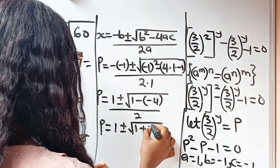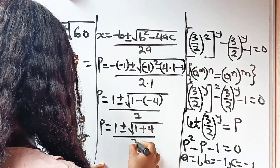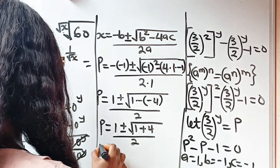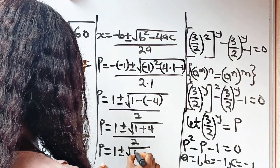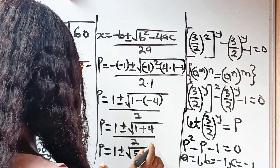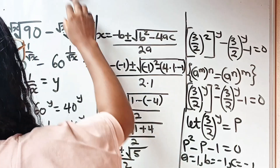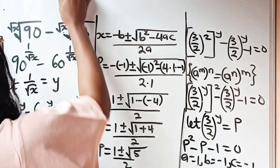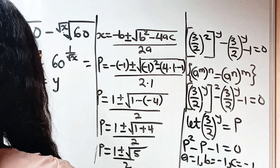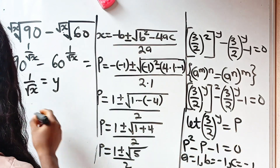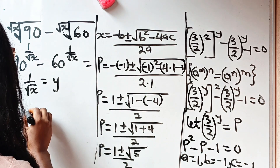Simplifying: p equals 1 plus or minus square root of 1 plus 4, divided by 2 — since minus times minus is plus. So p equals 1 plus or minus square root of 5, divided by 2. Recall that our p is (3/2) to the power of y.